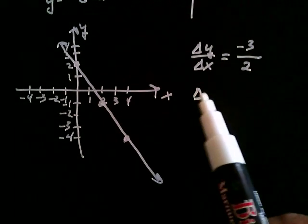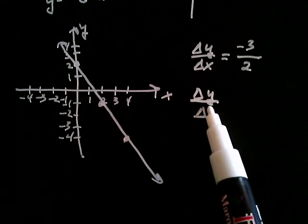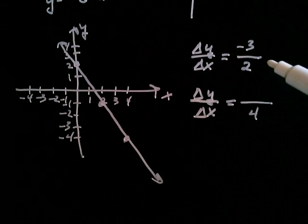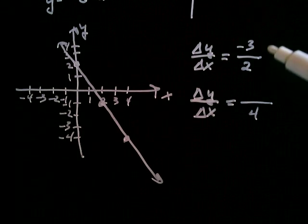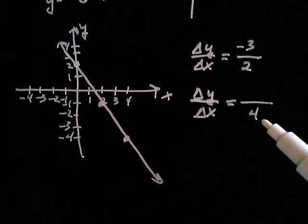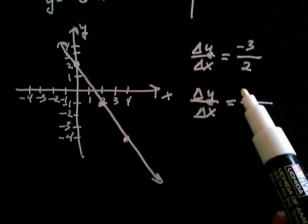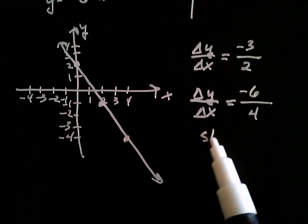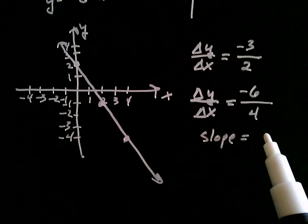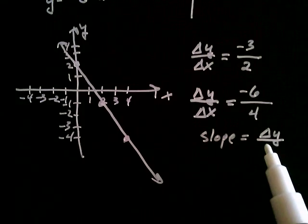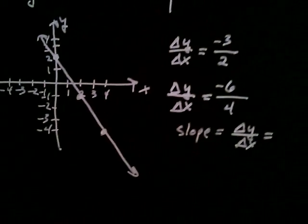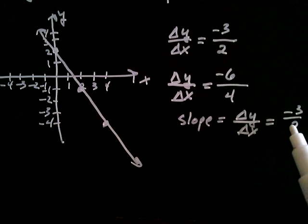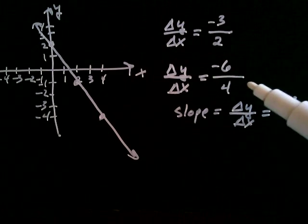What would happen if x increased by 4? Well, if increasing x by 2 caused y to drop by 3, then increasing x by 4 means y better drop by 6 — twice as much. So what we're finding here is that the slope, delta y over delta x, in this case is not a positive number, it's a negative. It's equal to negative 3 over positive 2, which reduces to negative 3 over 2.